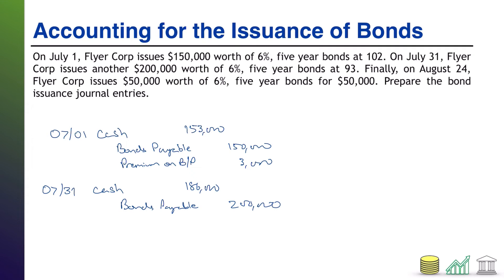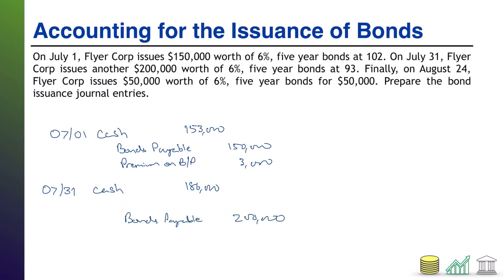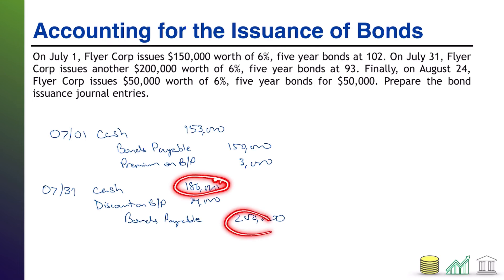Now we need to account for the other $14,000 because our journal entry is imbalanced. Only this time, it's going to be a debit of $14,000, and that debit is known as a discount on bond payable. Because it is reducing the value of our bond — we only got $186,000 versus a face value of $200,000 — the discount is recorded on the opposite side of the journal entry from the bond itself.